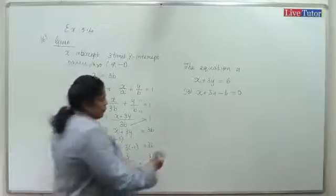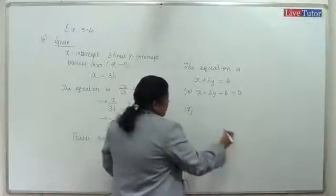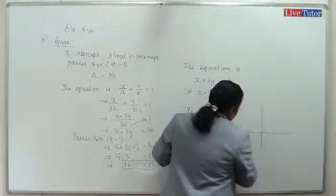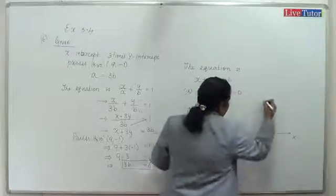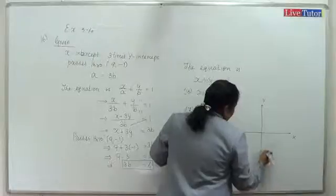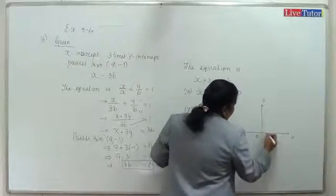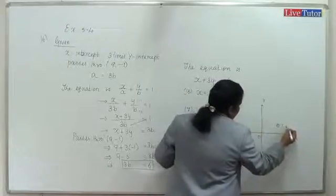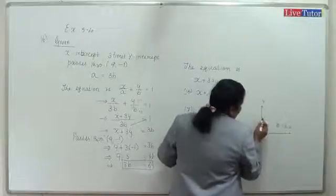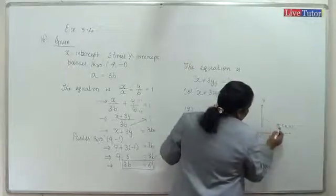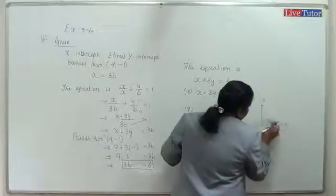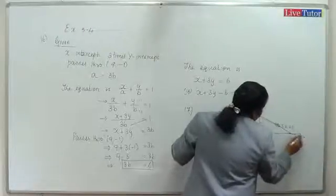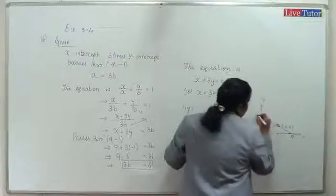We draw a diagram for question 17. The point (3, 2) is the midpoint of AB. On the x-axis, point A has coordinates (a, 0) and on the y-axis, point B has coordinates (0, b).